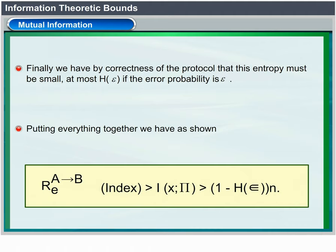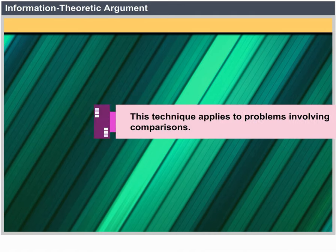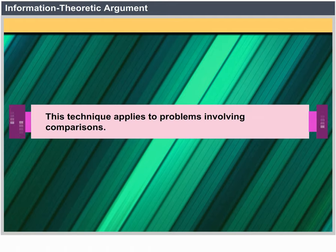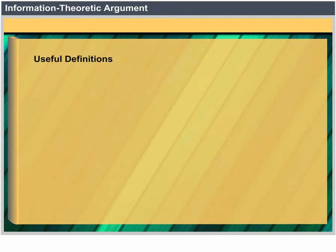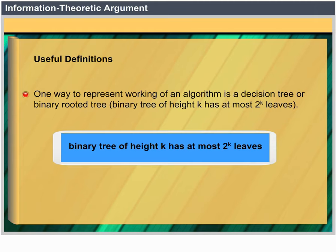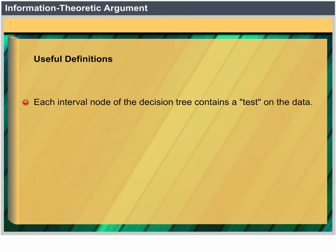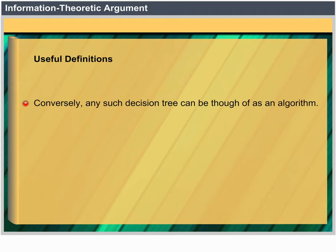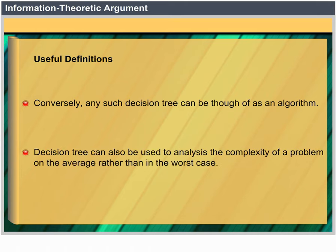Information theoretic argument: this technique applies to problems involving comparisons. One way to represent the working of an algorithm is a decision tree or binary rooted tree. A binary tree of height k has at most 2^k leaves. Each internal node of the decision tree contains a test on the data, and each leaf or verdict contains an input. Conversely, any such decision tree can be thought of as an algorithm.